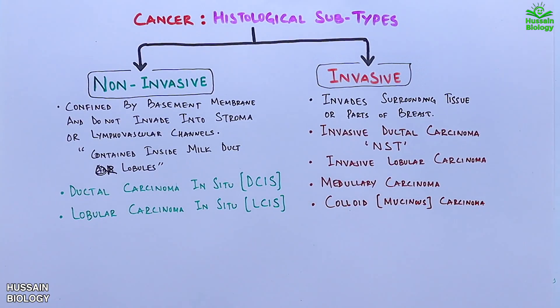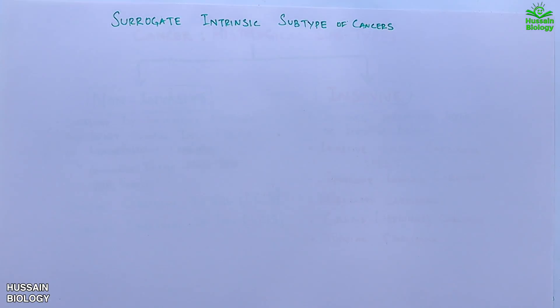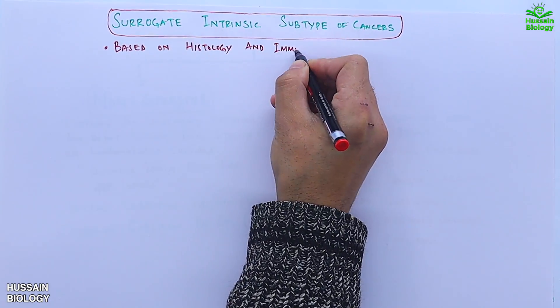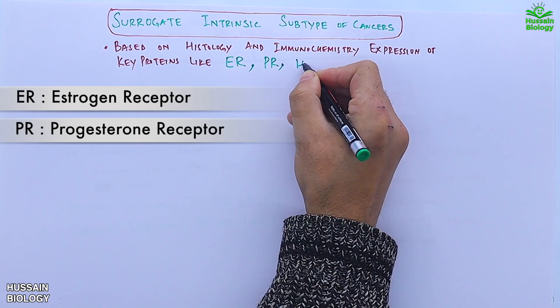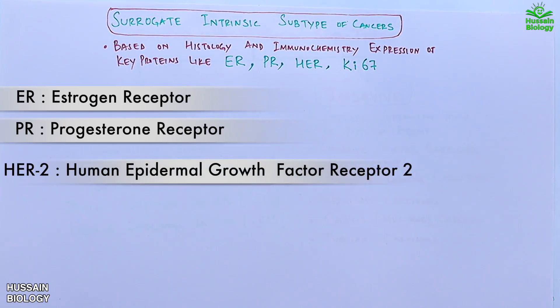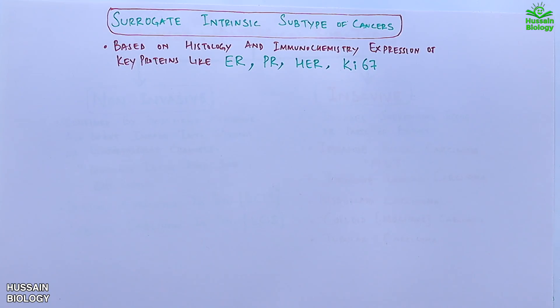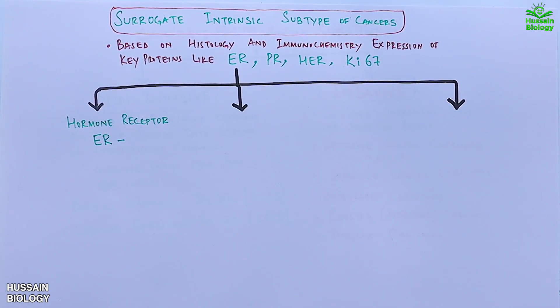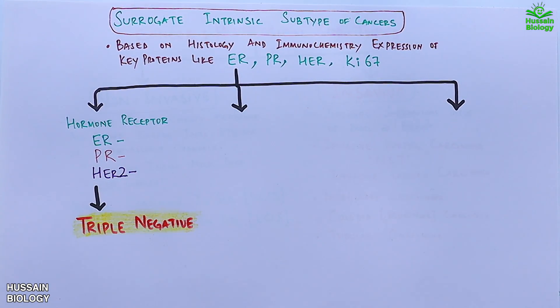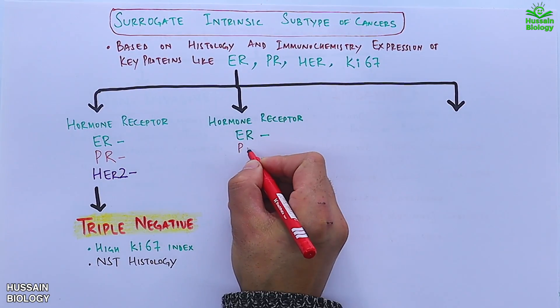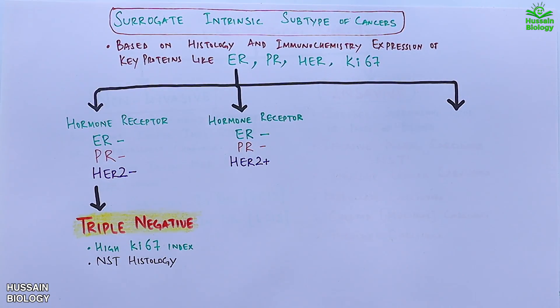Moving to other invasive subtypes: the second is invasive lobular carcinoma, third is medullary carcinoma, fourth is colloid carcinoma, and fifth is tubular carcinoma. Now let's get to the surrogate intrinsic subtypes of cancers. These subtypes are based on histology and immunochemistry of key proteins like ER (estrogen receptor), PR (progesterone receptor), HER2 (human epidermal growth factor receptor 2), and Ki67. Based on these, hormone receptor ER negative, PR negative, and HER2 negative produces triple negative cancers, which have high Ki67 index with NST histology.